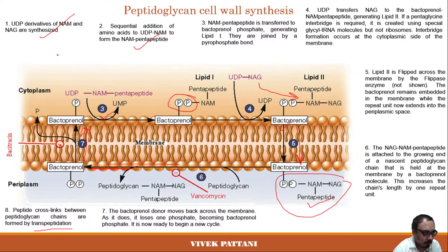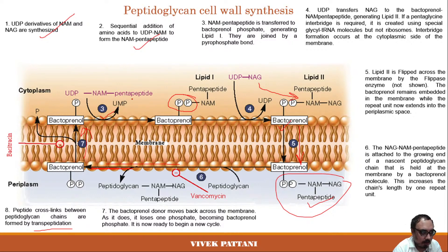To recap the whole process: it starts with formation of UDP derivatives of NAM and NAG — N-acetylmuramic acid and N-acetylglucosamine — where UDP is uridyl diphosphate. Upon formation of UDP-NAM, five amino acids are added sequentially. On the cytoplasmic side of the membrane in the presence of bactoprenol, UDP is converted to UMP and the bactoprenol-NAM pentapeptide complex is formed, joined by a pyrophosphate bond.